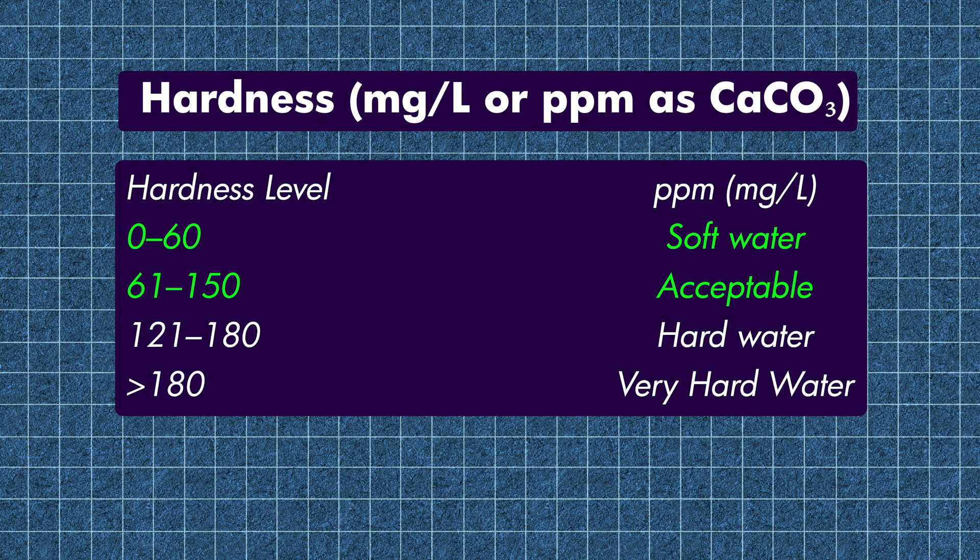If you have to consider it above 150, you can consider it hard water. There are gradients — like 150 to 200, 200 to 250. They are going to be gradients. As much as possible, keep it very low.